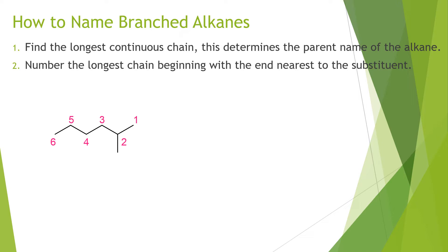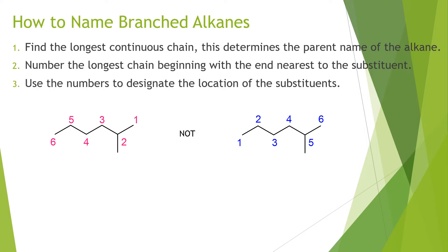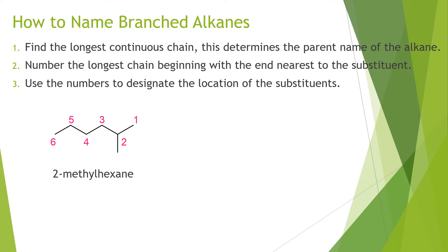The overall goal for numbering your parent compound is always to give the lowest possible number to the substituents. We would not number from left to right because then the substituent ends up on carbon number five — we want to give it the lowest number. The numbers used to designate substituent locations are called locants because they tell you where on the molecule you can find that substituent or functional group. So the correct name for this compound is 2-methylhexane.